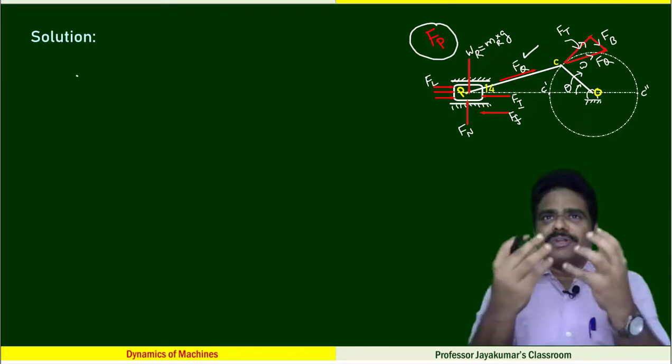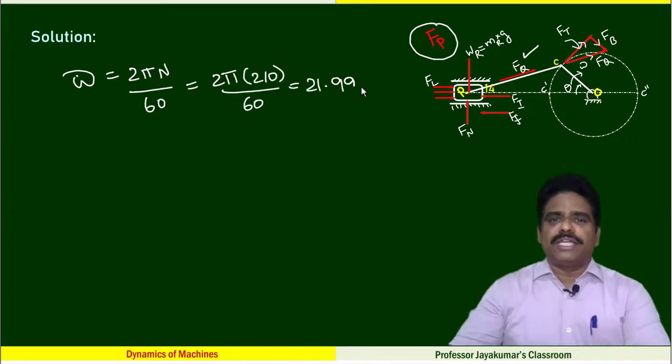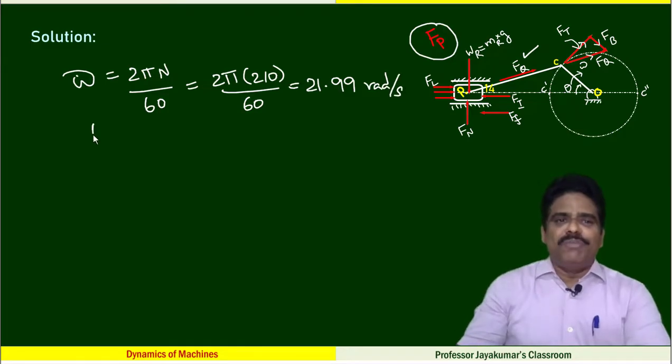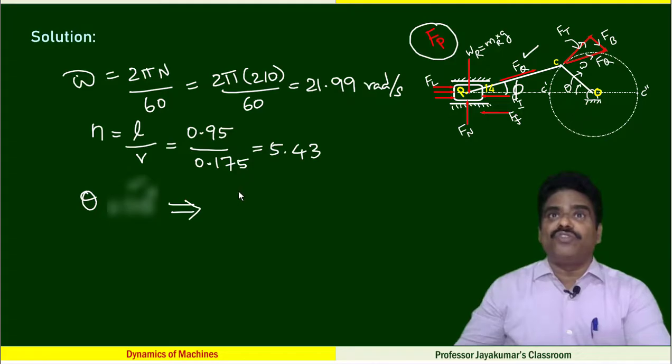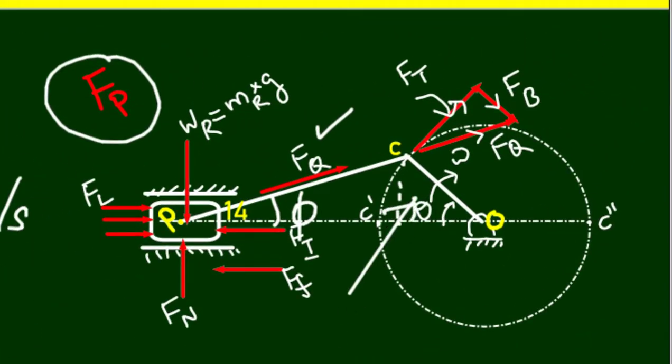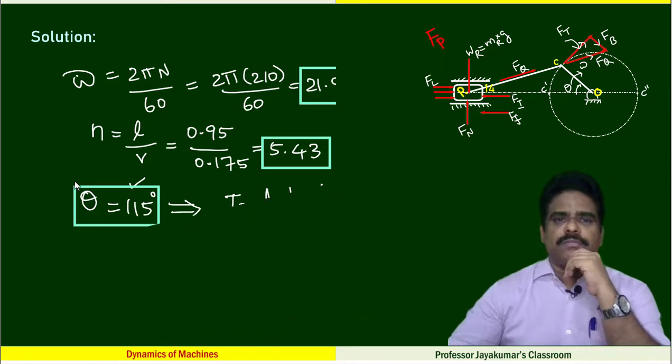I need ω angular velocity of the crank. We know the formula 2πn/60, which gives 21.99 radians per second. I need the obliquity ratio, which is nothing but ratio between the length of the connecting rod and crank radius, L/R ratio is 5.43. When θ is given, how to find φ? From this right angle triangle, I can write R sin θ equals L sin φ. So substituting the given value of θ 115 degrees and N value, we could be able to get φ value.